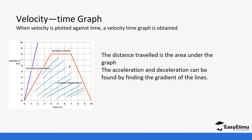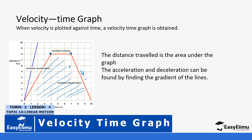You notice the velocity increases gradually up to a constant point and then decelerates. When you do the acceleration calculation for the decelerating section, it will give you negative values because the object is decelerating.